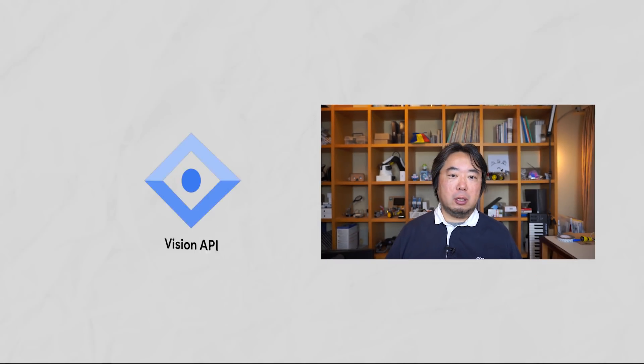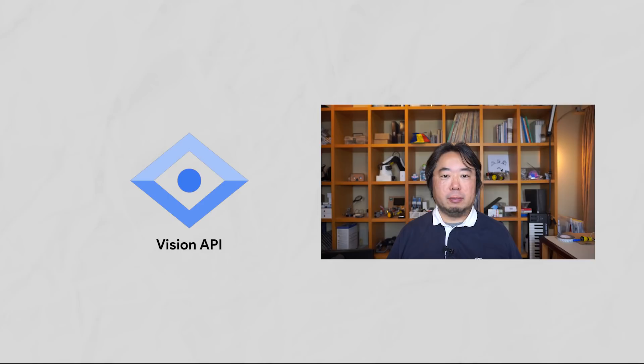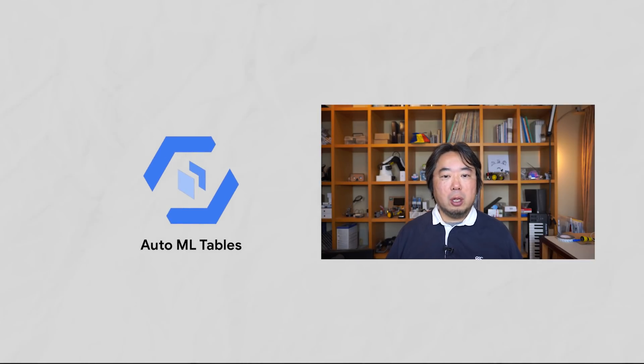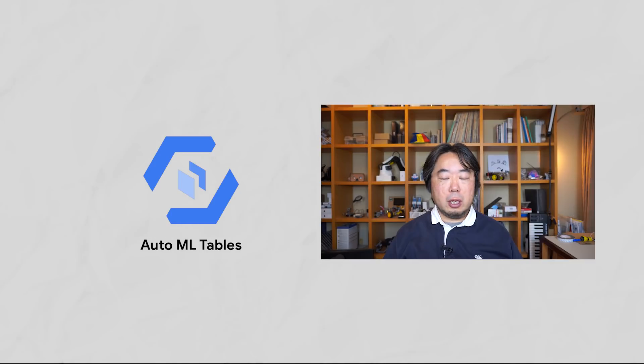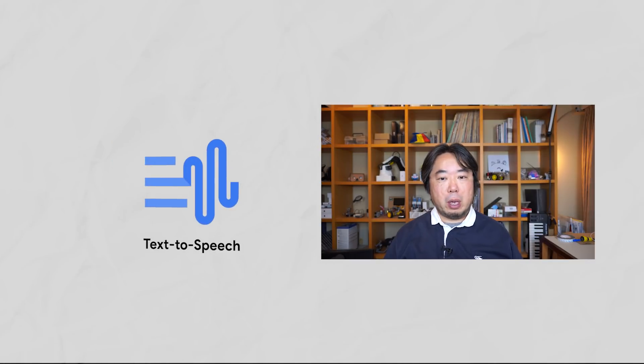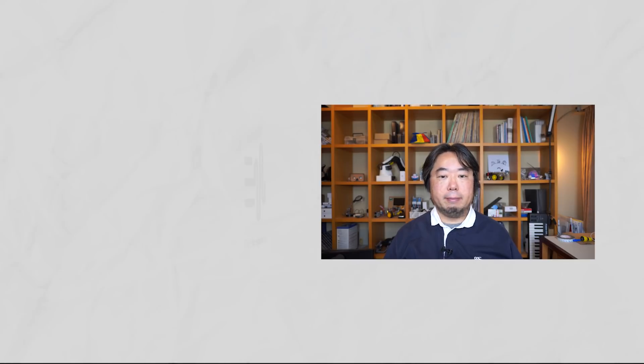So first I decided to chat with Kaz to see how he built his project. He converted PDF books into text files using the Vision API OCR feature, used AutoML Tables to understand the layout of the documents, and then used the Text-to-Speech API to convert the pre-processed text into an MP3 audio file.